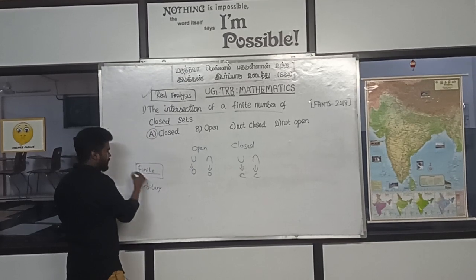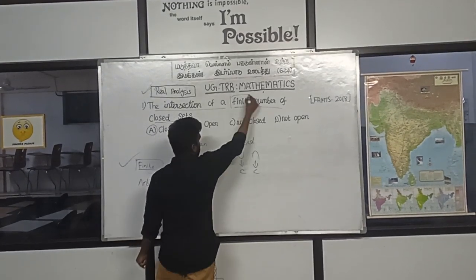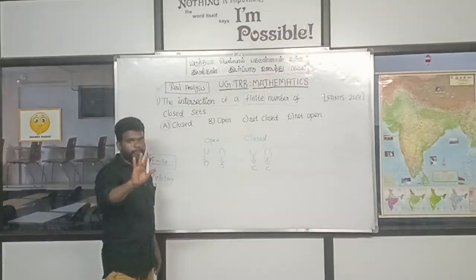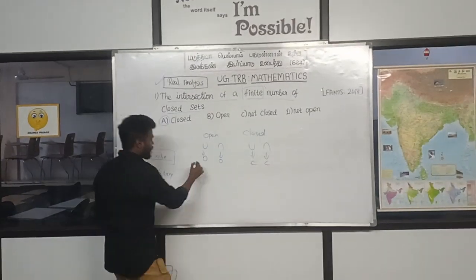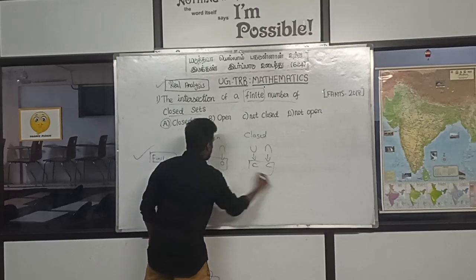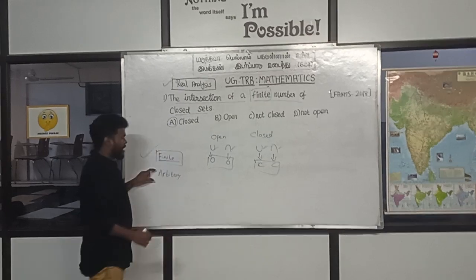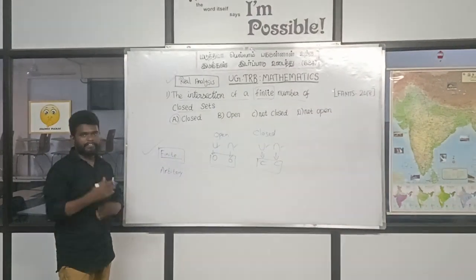Finite finite, closed set, open set intersection open, close. Union intersection arbitrary variation.